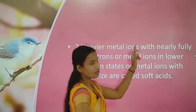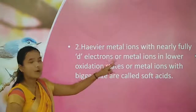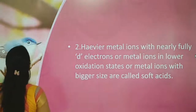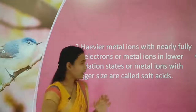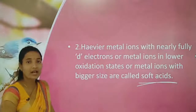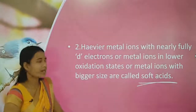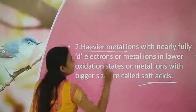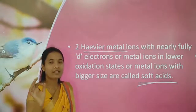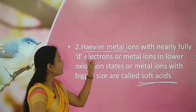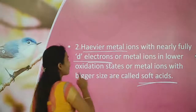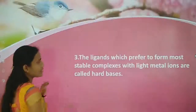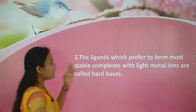The second category is soft acids. Heavier metal ions with nearly fully filled d-electrons, or metal ions in a lower oxidation state, or metal ions with a bigger size, are called soft acids.